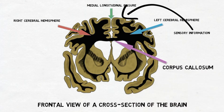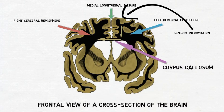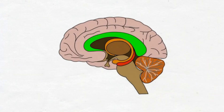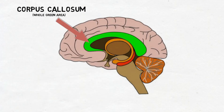The corpus callosum carries information received in one hemisphere over to the other and in general allows for communication between the two hemispheres. It is a large, C-shaped nerve fiber bundle that stretches across the midline of the brain connecting the left and right cerebral hemispheres, and it makes up the largest collection of white matter found in the brain.